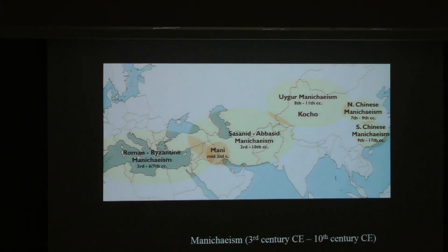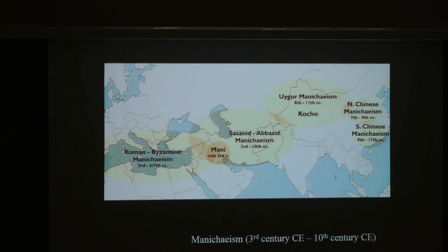Manichaeism spreads from Persia, after the persecution of Mani, into Western Central Asia and then ultimately into the Tarim Basin and also into China. And Central Asia had almost no state religion — it's always been a patchwork of kingdoms, so there was never really a top-down approach to what people should believe.